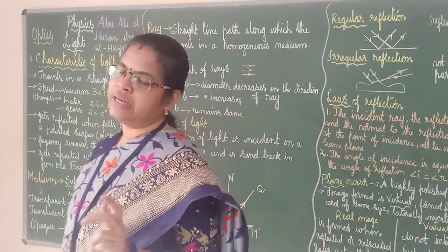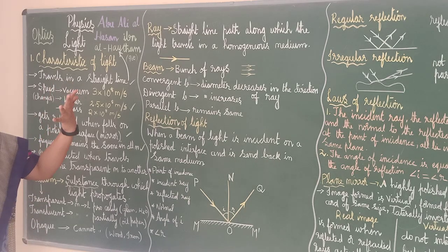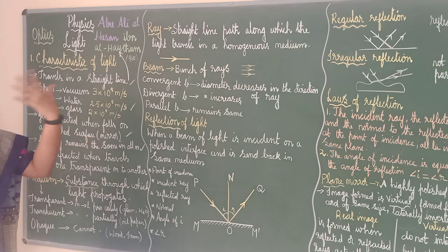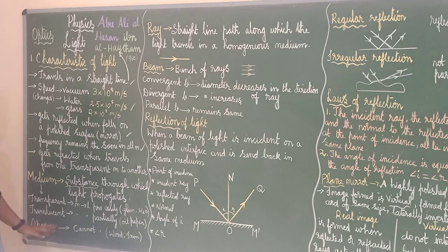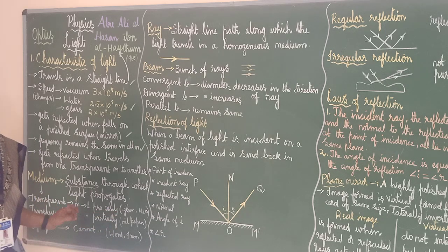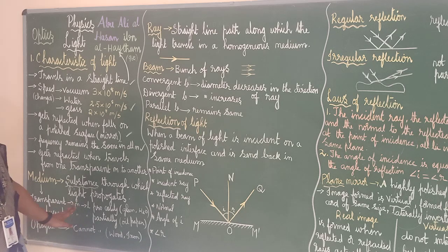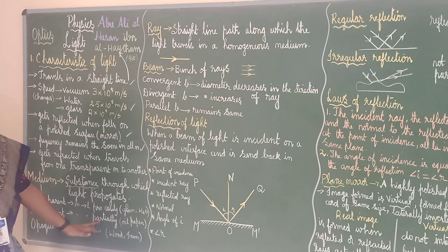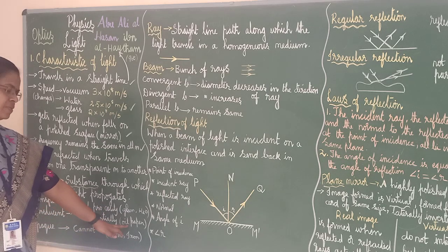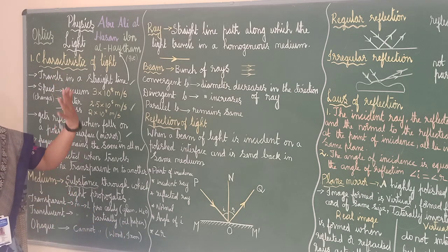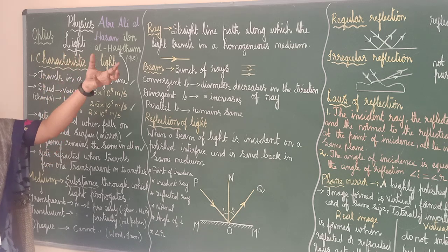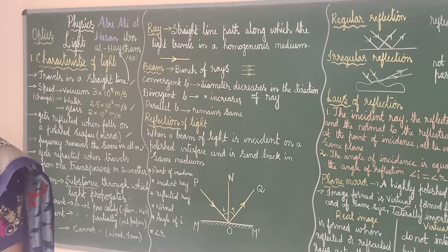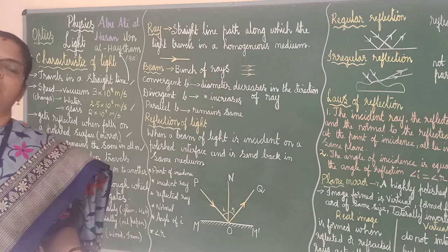Transparent medium — we can see what is on the other side. The medium in which light propagates easily is called transparent. For example, glass and water. Translucent — the medium in which light travels partially is called translucent. For example, oil paper — you can see something but not clearly. Like frosted window glass — someone will be standing but you will not be able to see their face clearly.